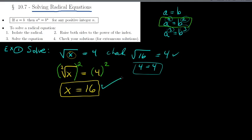So the basic method is: isolate the square root on one side of the equation, then raise both sides to whatever the index is — if it's a square root, square both sides; if it's a cube root, cube both sides.